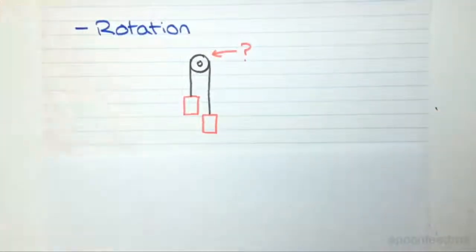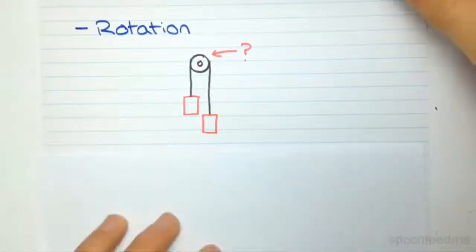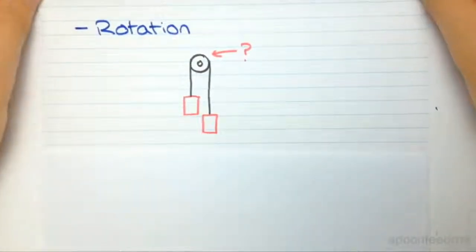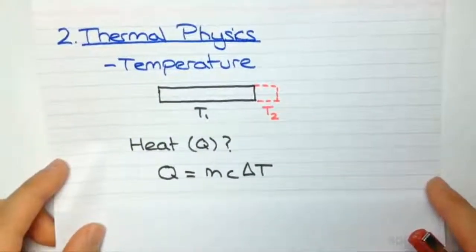Our final topic in mechanics is rotation, where we combine all the principles we've learned about energy and forces to rotating bodies, such as this pulley, or even wheels rolling down hills. And that essentially concludes mechanics, which actually makes up most of the course, but at the same time it's quite intuitive, unlike the topics that follow. Due to our ability to picture in our minds the situations represented by questions that we come across...